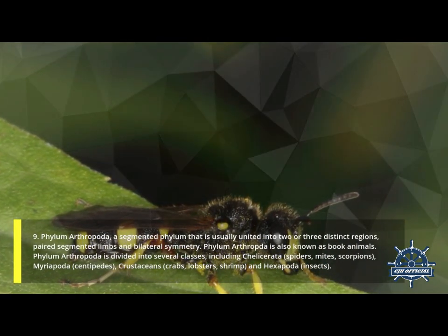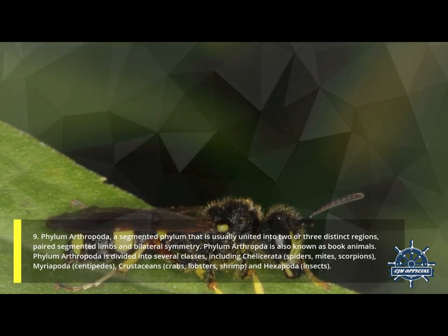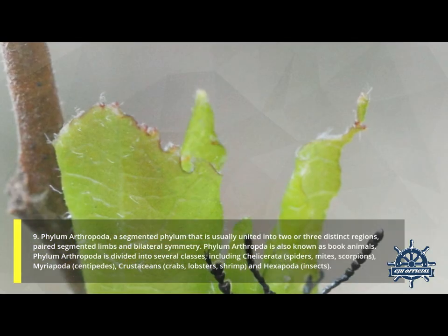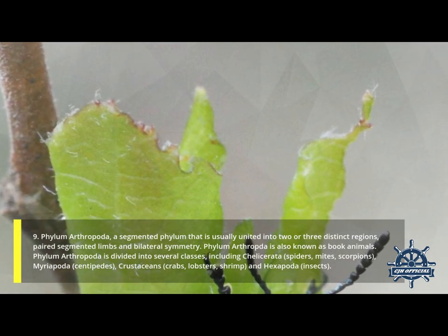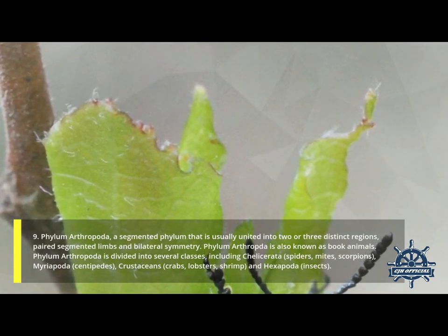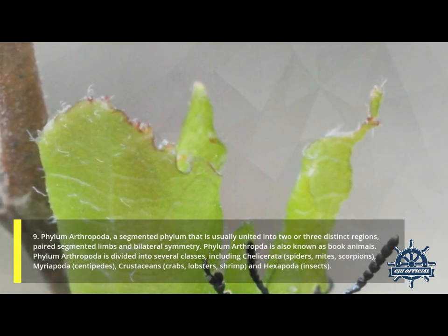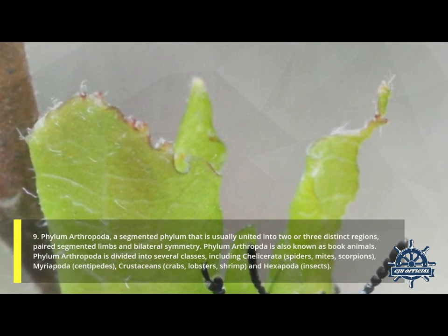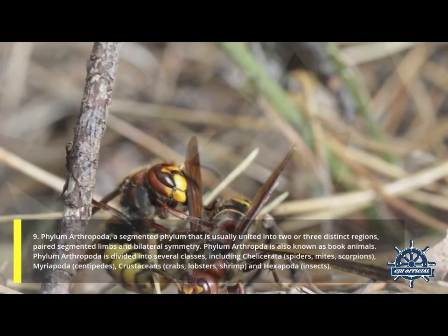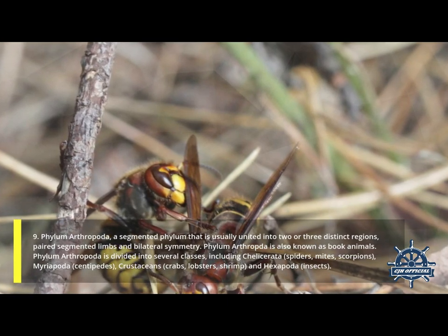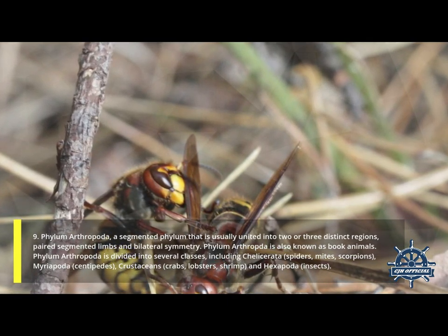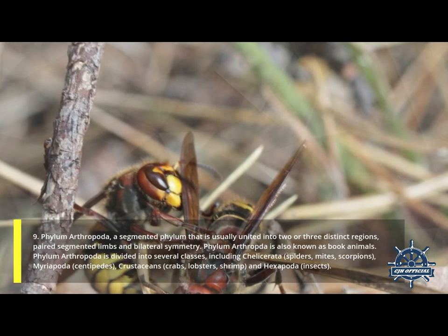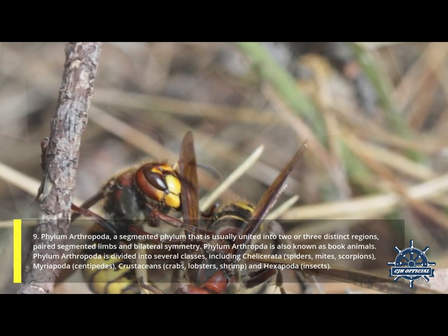Ninth, Phylum Arthropoda — a segmented phylum usually united into two or three distinct regions, with paired segmented limbs and bilateral symmetry. Phylum Arthropoda is also known as jointed-leg animals. It is divided into several classes: Chelicerata (spiders, mites, and scorpions), Myriapoda (centipedes), Crustacea (crabs, lobsters, shrimp), and Hexapoda (insects).